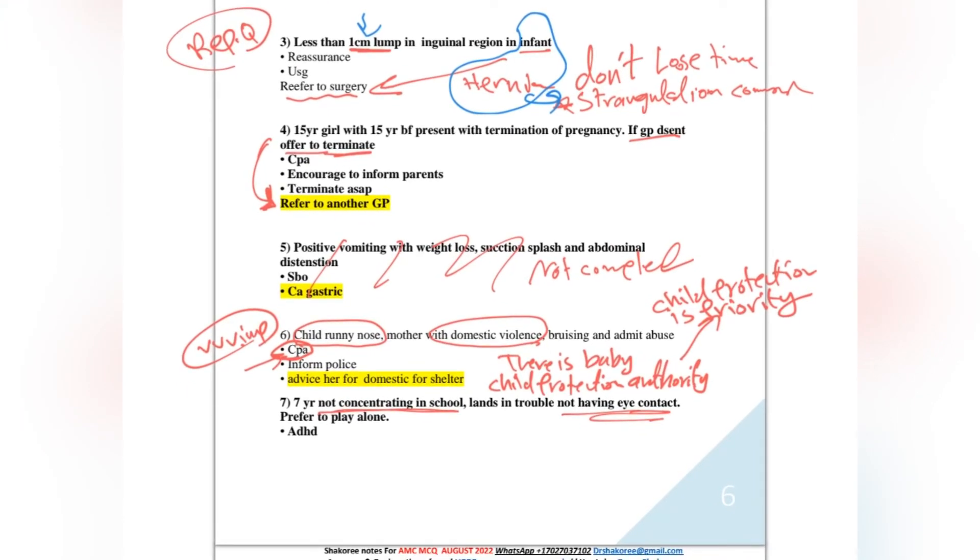A 15-year-old girl with boyfriend presented for termination of pregnancy. You are a GP but you don't want to do termination, and this is illegal for you as a doctor. You are not doing this type of medical intervention. So what to do? Please refer this girl to another GP. Refer this girl to another GP.